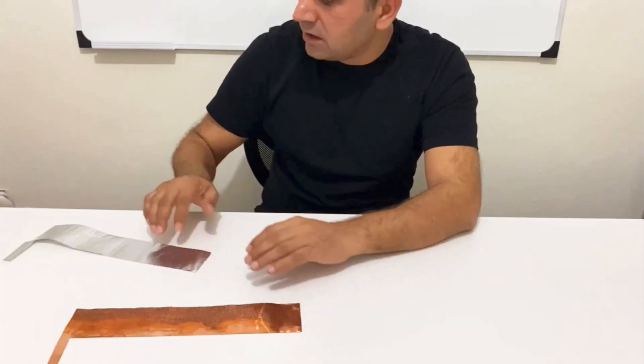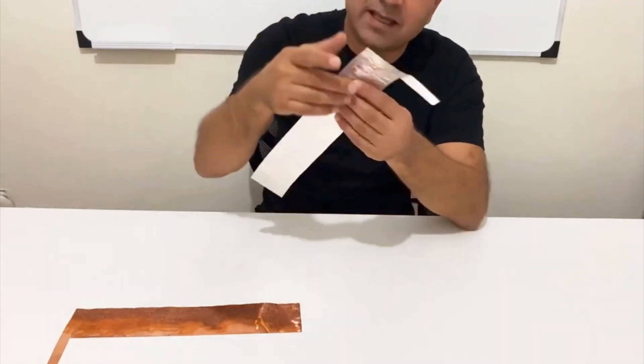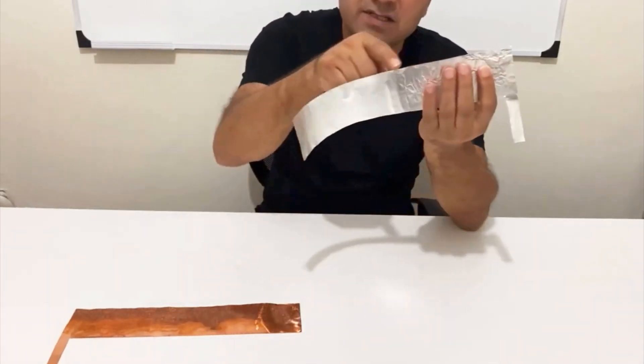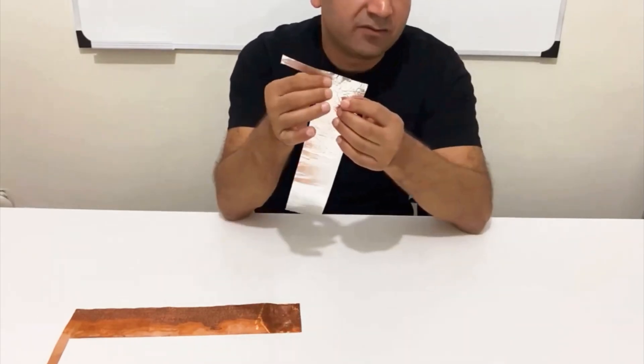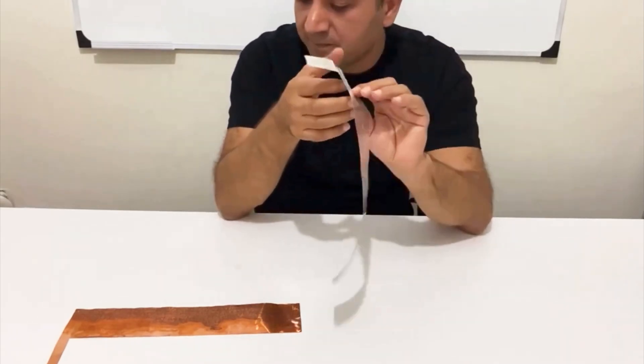Second thing we need is an aluminum foil, again with the same size, 30 centimeters to 6 centimeters. And you have the same part for using as the terminal of the battery.